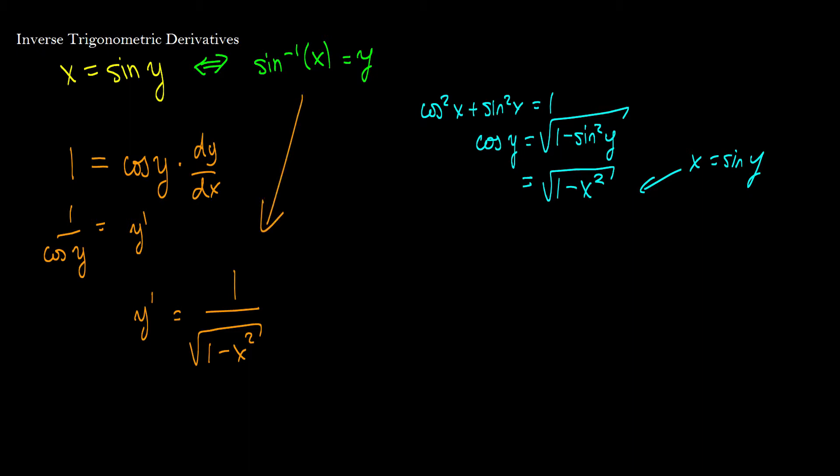Okay, so, now that we've proved sine inverse x, I would like to see, on your own time, if you can prove the derivative of cosine inverse of x, which I'll give you the derivative here, is negative 1 over the square root of 1 minus x squared. And the inverse of tan x, which is 1 over 1 plus x squared.